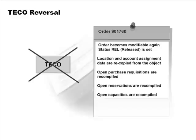Any open purchase requisitions are recompiled — materials you thought you no longer needed, for which you had created purchase requisitions and dropped, are restored if you still need them. Any open reservations and open capacities are also recompiled, because you may still need all of these since the order hasn't actually been completed.